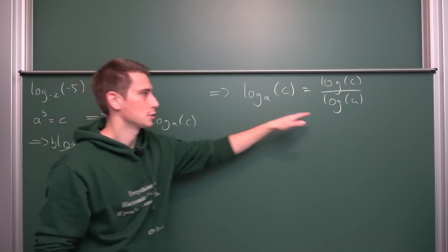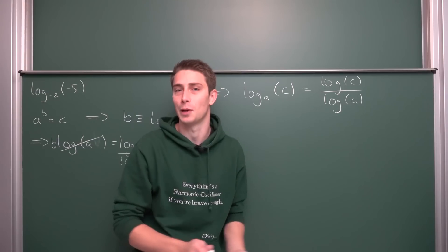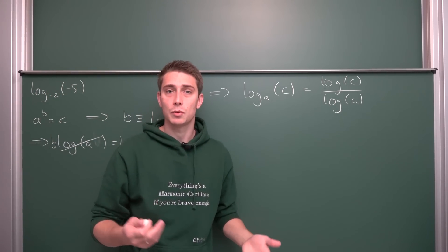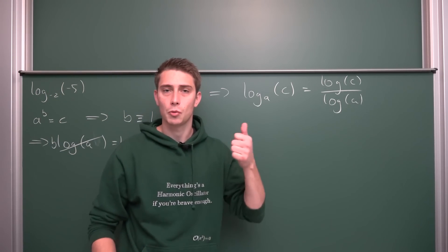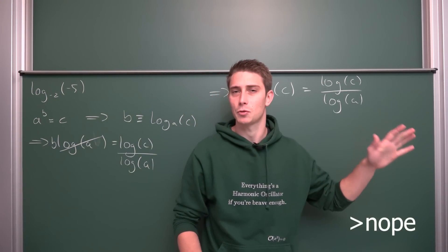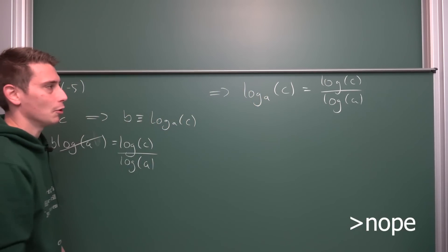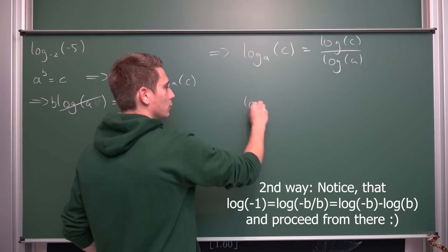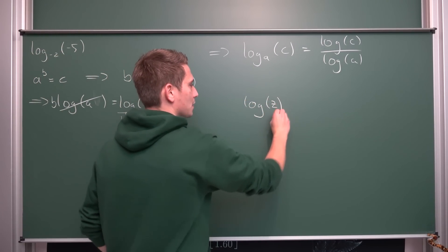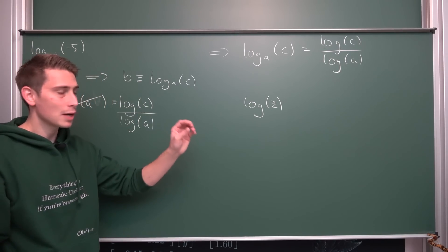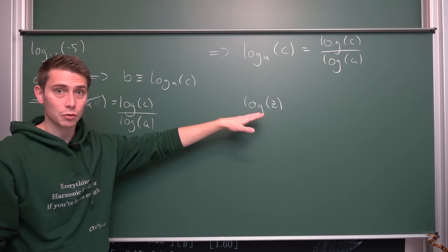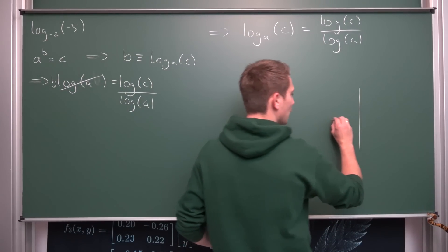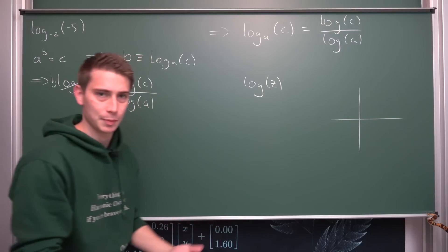Now for this we are going to take a look at the complex plane. There are several ways to derive something like this and I'm going to show you one at first — and if there's some time left, a second way. So at first we are going to take a look at the logarithm of just some complex number z. This is the natural log right now, and we are going to jump into the complex plane.